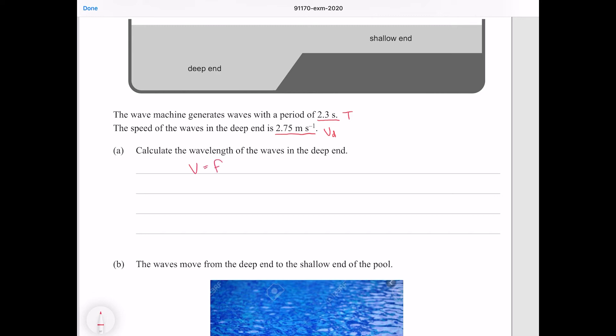So to do this we can use the equation that the velocity is equal to the frequency times the wavelength. We can solve this for wavelength by dividing both sides by frequency, and I'm also going to put wavelength on the left hand side. And you might note that we don't have the frequency but we do have the period, and we know that the frequency is equal to one over a period, so we can just make that substitution.